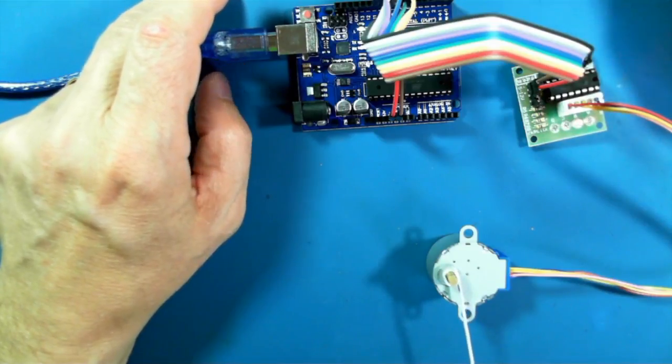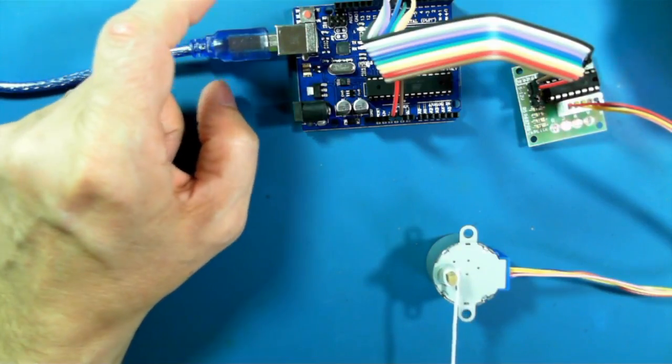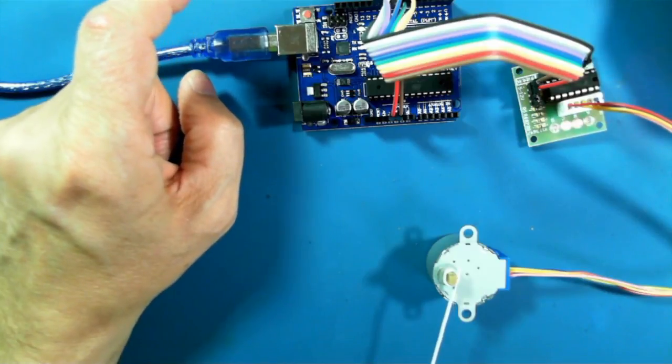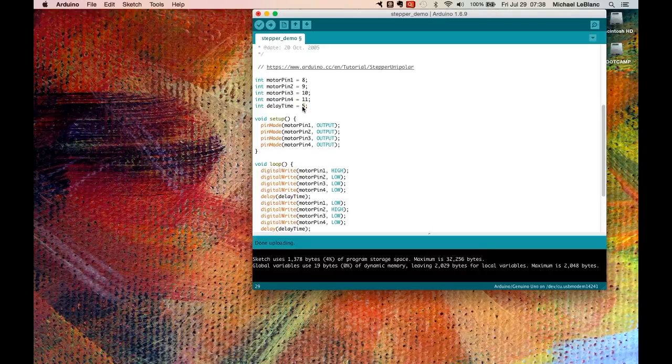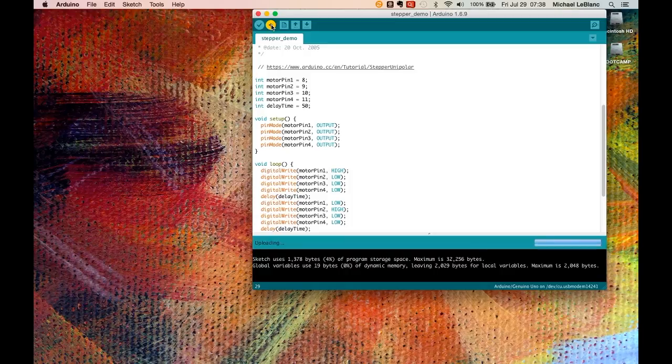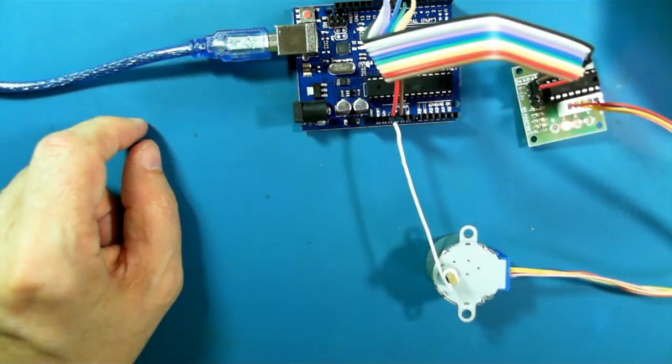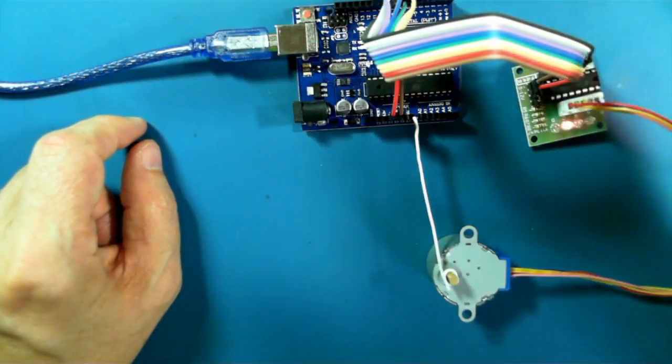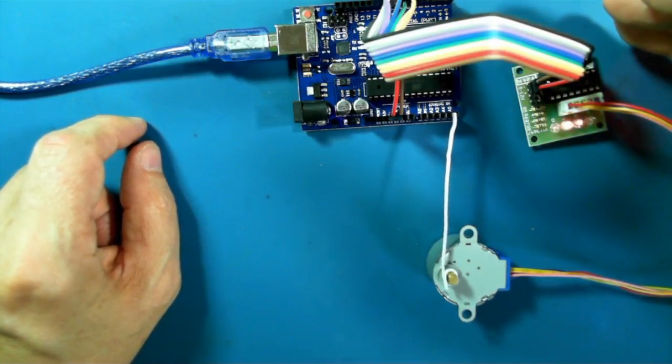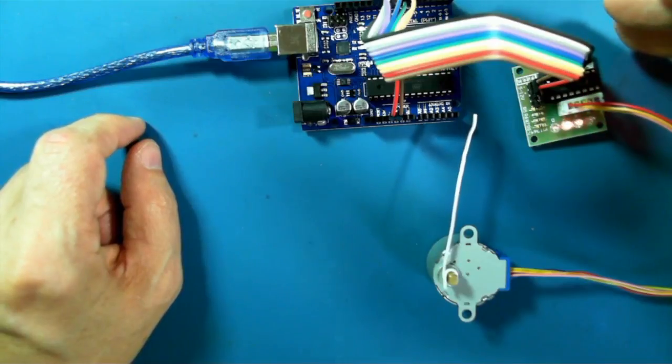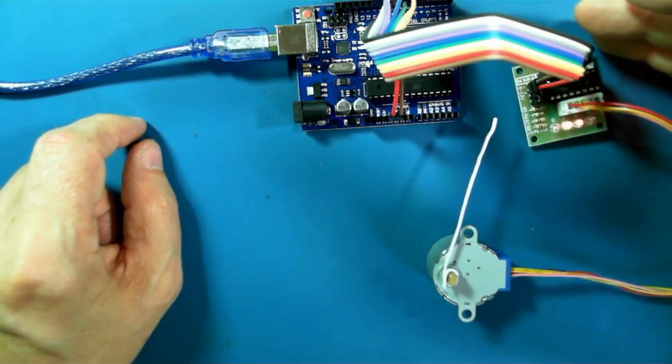If we go back to our sketch and change the delay, let's set it rather than 29, let's give it 50.